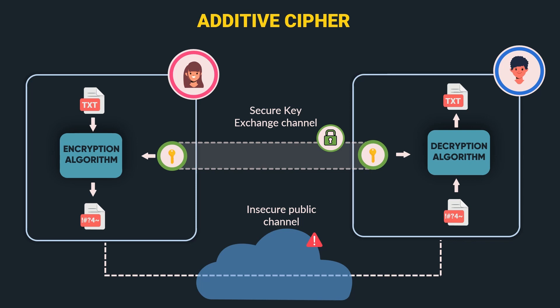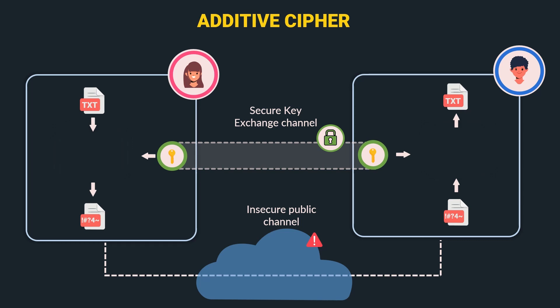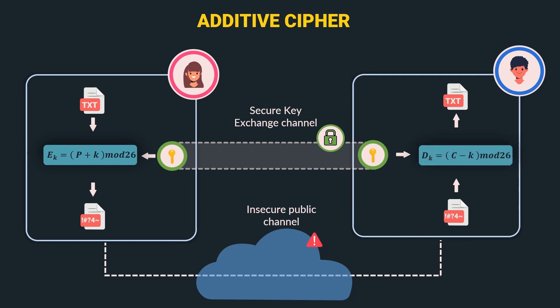Coming back to our diagram, we will define the encryption and decryption algorithm for our additive or shift cipher. The encryption algorithm is E(k) = P + K mod 26, while the decryption algorithm is D(k) = C − K mod 26. This was the diagrammatic representation of the additive cipher.